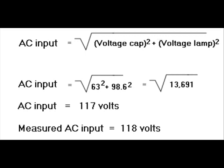Here I have used the Pythagorean theorem. That is I took the voltage across the capacitor and squared it, and added it to the voltage measured across the lamp and squared that. The sum of course was 13,691. If I took the square root of that number, woe and behold, it comes back pretty darn close, barring rounding errors, to 117 volts. My measured AC input was 118 volts.